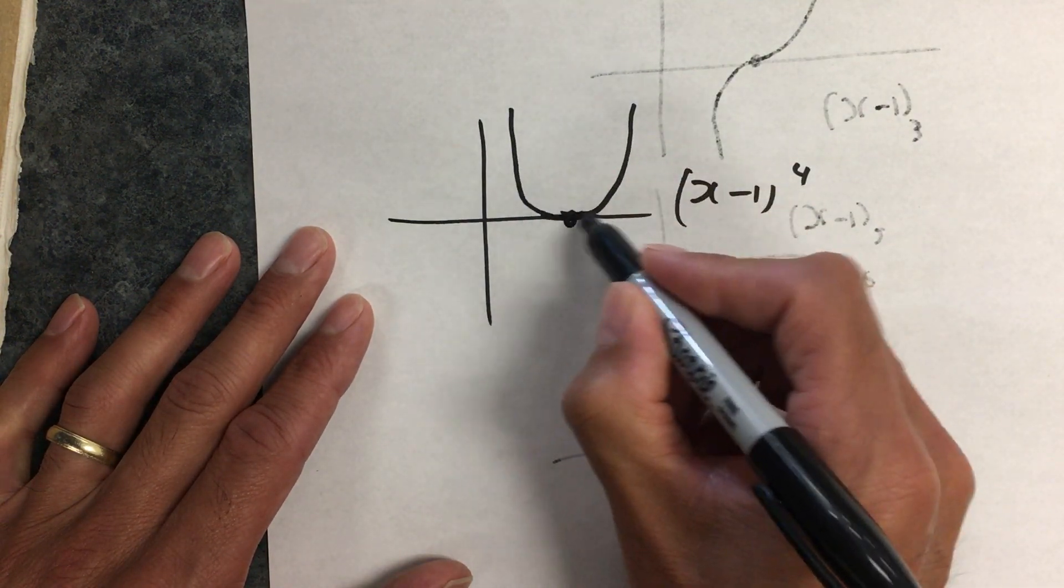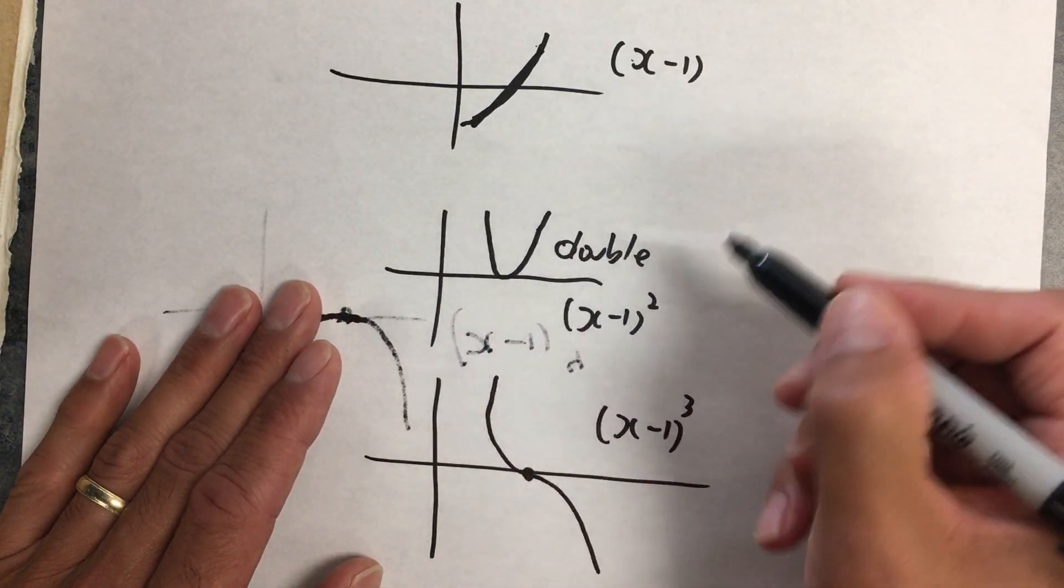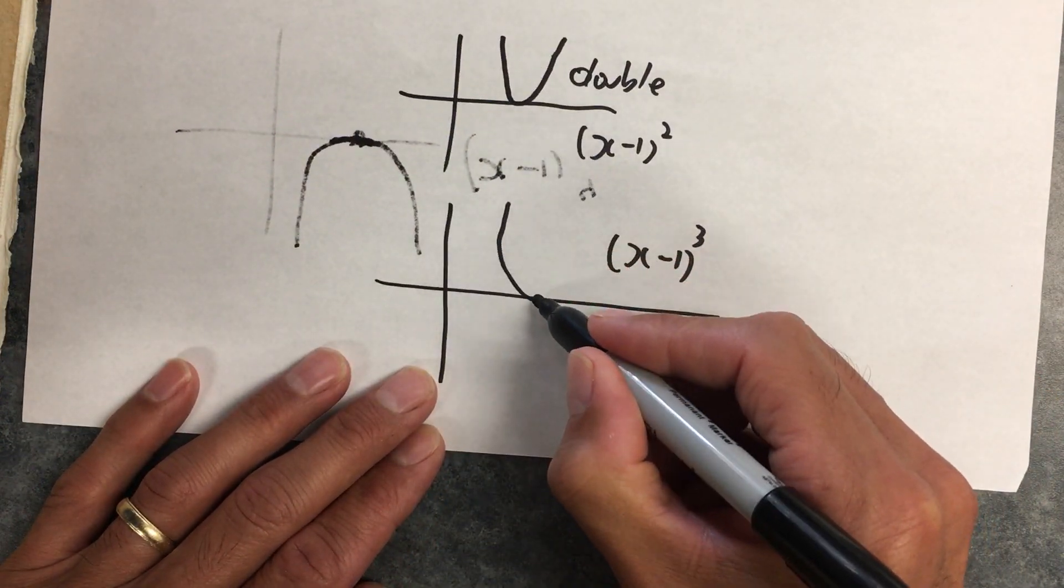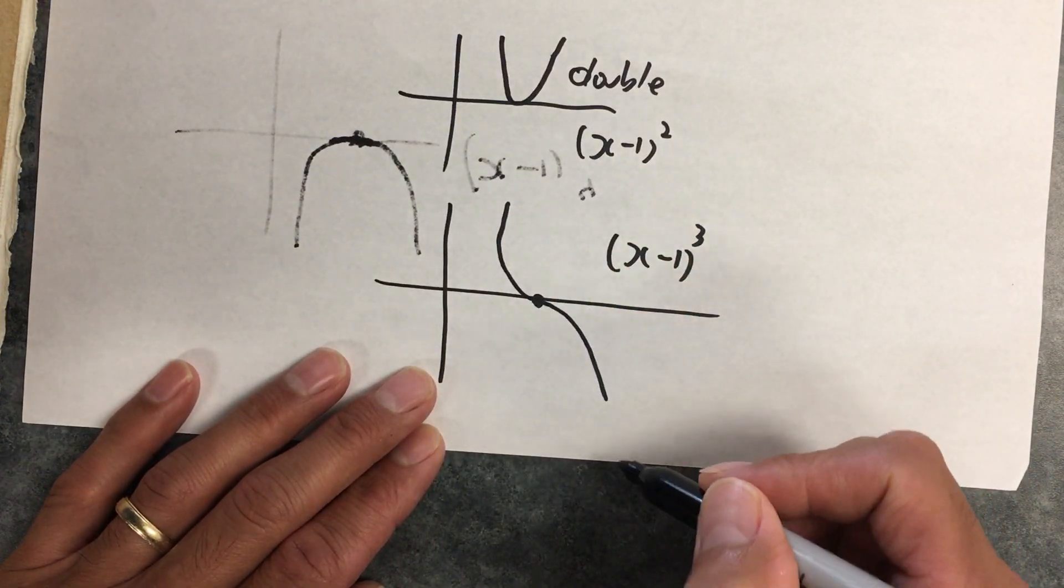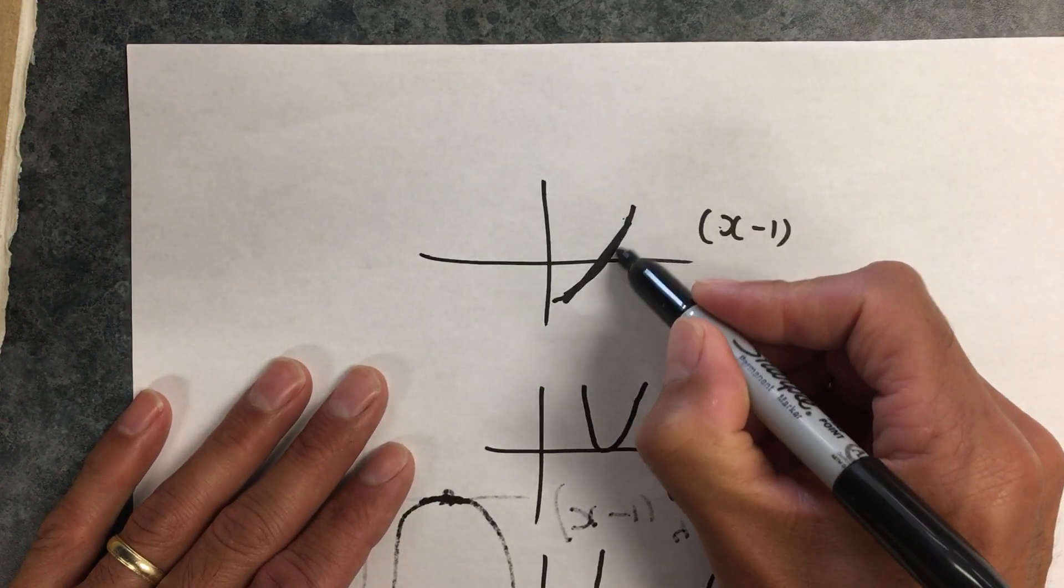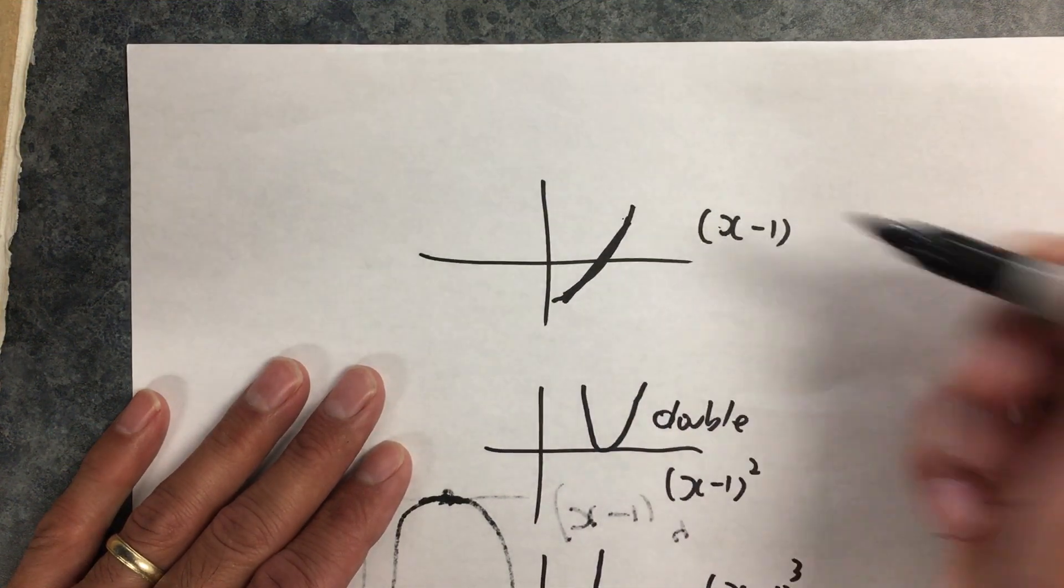So if it bounces and flattens, that's typically a fourth root. If it just bounces but looks like a parabola, that's a double root. If it curves one way and then curves the other—we call this an inflection point—that's a triple root. And if it just curves but nothing funny happens through the transition, that's a single root.